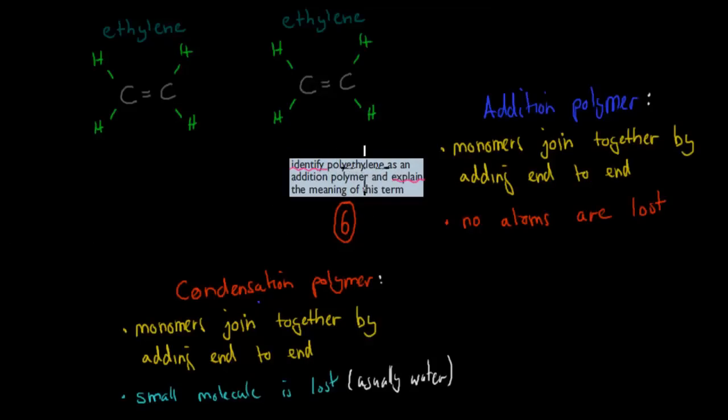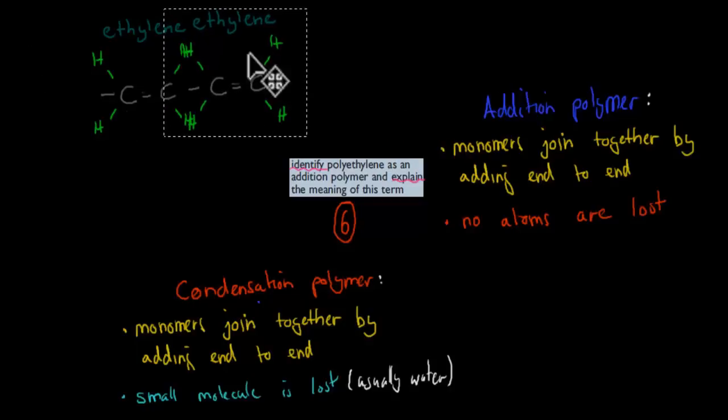Identify polyethylene as an addition polymer and explain the meaning of this term. So what I'll show you now is what happens when we connect two ethylenes. Again, these bonds get broken, double bonds get broken, and then they will connect. And I'll bring that closer. So now they're connected. Now we have polyethylene. And what you can just see is monomers join together by adding end to end. That's what happened just now. And also, no atoms were lost. So just things were connected. The double bonds were broken, but nothing was lost. And that's the definition of an addition polymer.